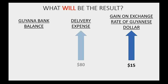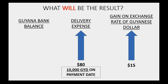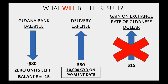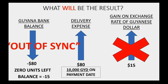However, what will the actual result be? The delivery expense must increase by the U.S. dollar value of the service at the moment you paid — $80, since you paid all $10,000 Guyanese dollars. But instead of recording the $15 gain, the Guyana bank balance will decrease by the whole $80. And even though there are zero units left, the balance of the Guyana bank account will go down to negative $15, even though it should be zero, meaning the Guyana bank account will be out of sync regarding the value of each unit compared to the balance of the account.